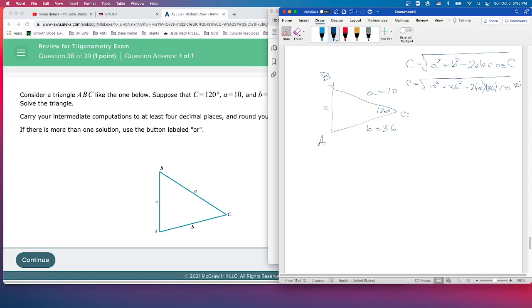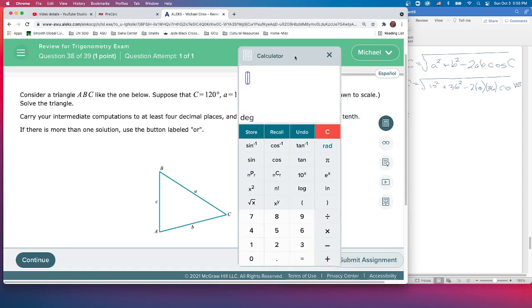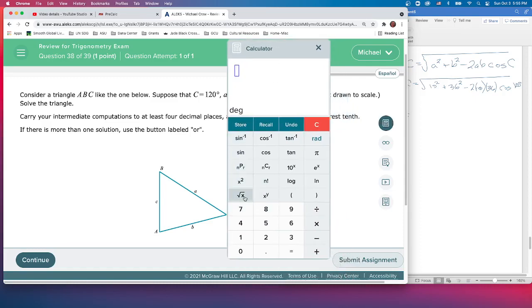Okay, we'll put all that in one fell swoop. Start with the square root: 10 squared plus 36 squared minus 2 times 10 times 36 times the cosine of 120 degrees equals...